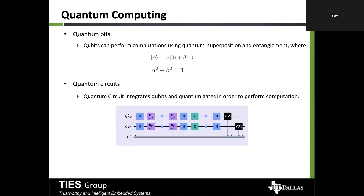Quantum bits or qubits are the basic units of quantum computing, just as normal bits are basic units for classical computing. Qubits can perform computations using quantum superposition and entanglement, where the state |ψ⟩ is represented as α|0⟩ + β|1⟩, where α and β are the probabilities of the qubit being in state zero or one respectively. Since the total probability must be one, α² + β² = 1.